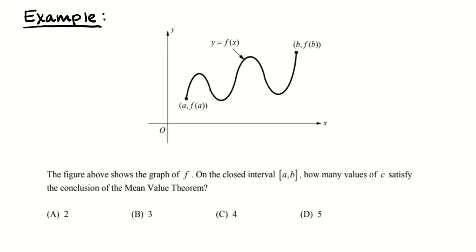The figure above shows the graph of a function f of x. On the closed interval a to b, how many values of c satisfy the conclusion of the mean value theorem? Now, I'll admit I did not get this from an actual AP exam or anything.